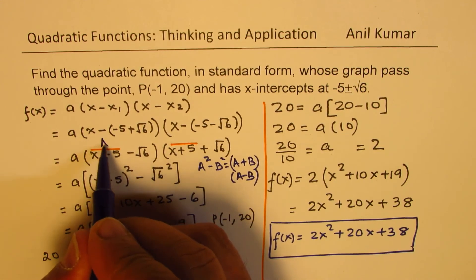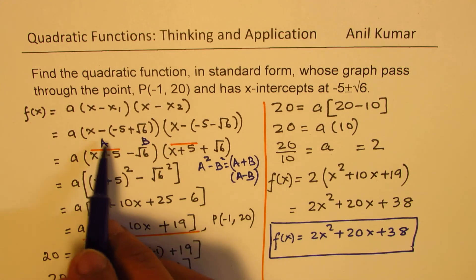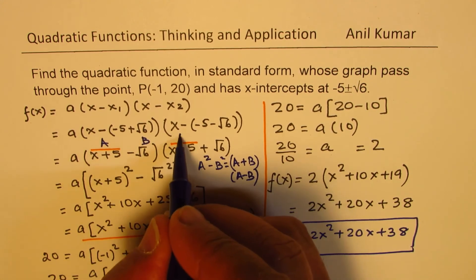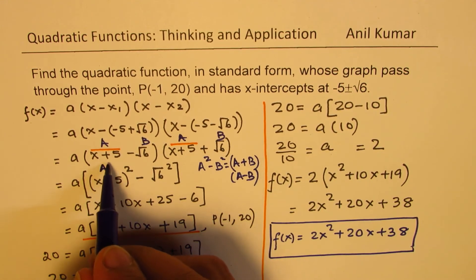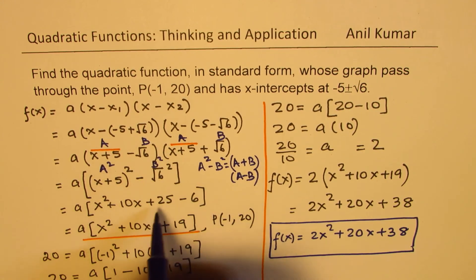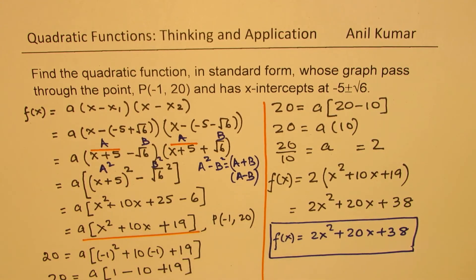So since you can treat this as a and this as b, so we have (a - b) times (a + b), we get a², right? This is our a², and that is b². And that is how you could simplify this, and then find the value of a using the given point (-1, 20) to get the answer.